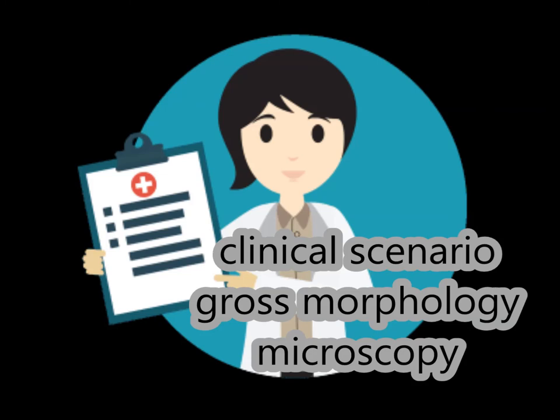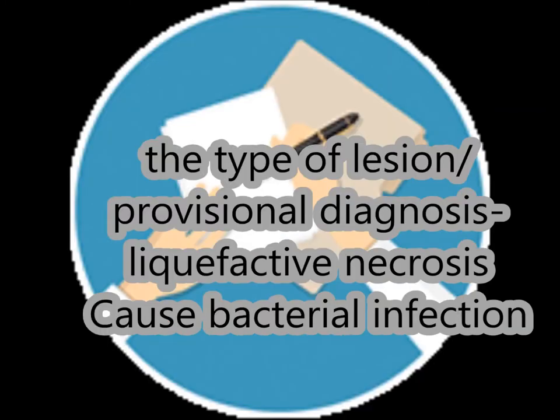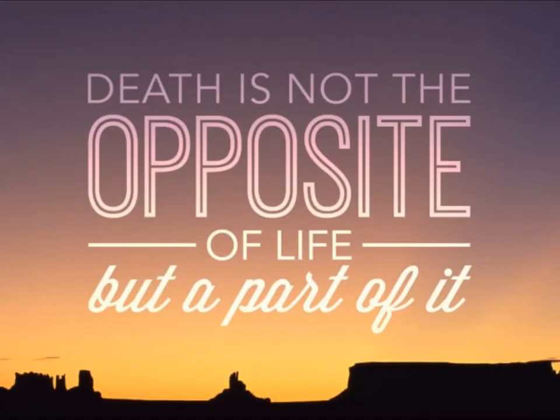Taking into account the clinical scenario, gross morphology, and microscopy, the type of lesion or provisional diagnosis is liquefactive necrosis. The cause is bacterial infection, as homeless persons are often drug addicts and this is a known case of infective endocarditis. Death is not the opposite of life, but a part of it.